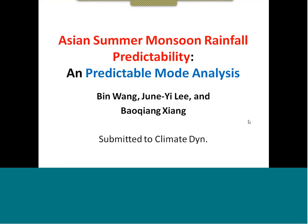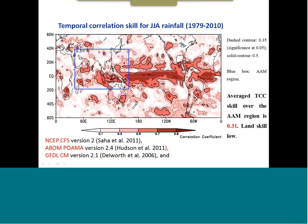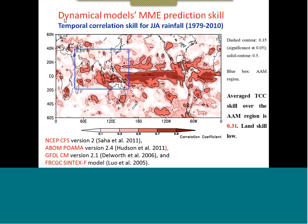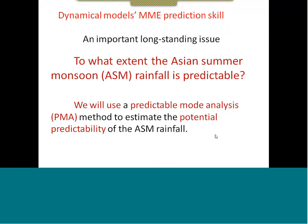This is going to be a discussion of the predictability of the Asian summer monsoon rainfall, introducing a new method to estimate this predictability, combined with predictions. This diagram shows the four models listed and their MME skill scores for rainfall forecast over the Asian ocean monsoon region. The area-averaged skill is 0.31 — not very high, especially over land. So the question is: to what extent is the Asian summer monsoon rainfall predictable? We will use the Predicted Mode Analysis (PMA) method to estimate this.